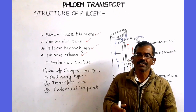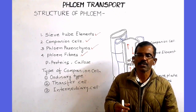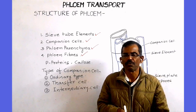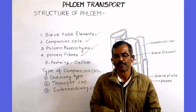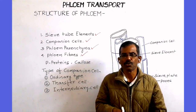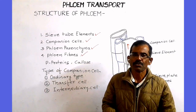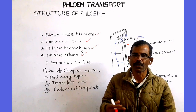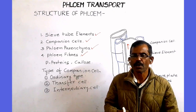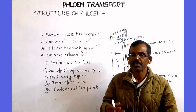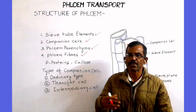In order to understand the process of phloem transport, we must understand the structure of phloem. Phloem is a vascular tissue present in both gymnosperm and angiosperm. In angiosperm, phloem is composed of different types of cells.